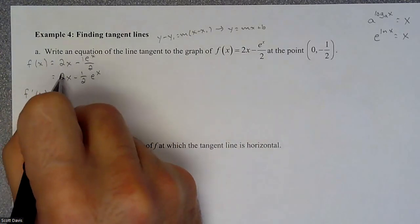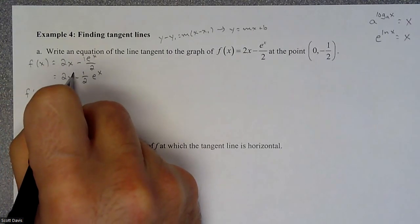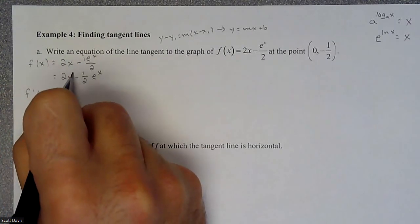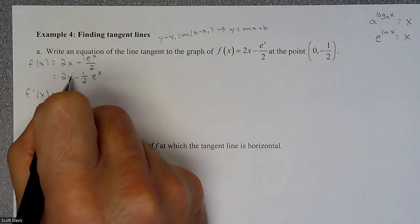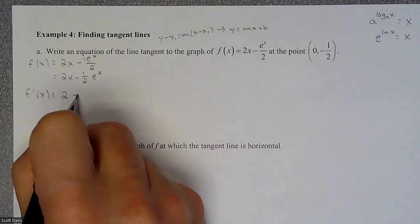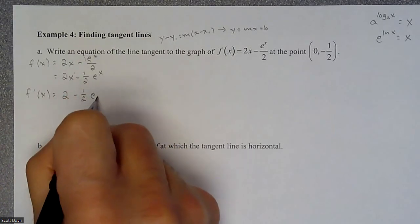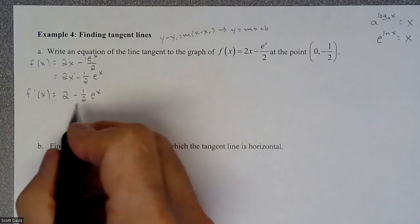I'm going to be doing the power rule to this. So the derivative of 2x is going to just be 2, and remember that this is a power of 1. That would multiply to the 2, and we would drop that to a power of 0. And so, anything to the 0 would make this go away. And then here, minus 1 half,